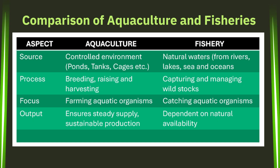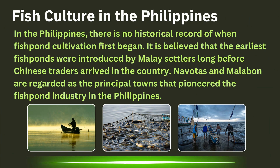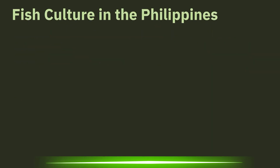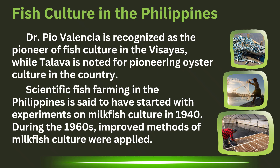The following is the comparison table of aquaculture and fisheries. Fish culture in the Philippines: there is no historical record of when fishpond cultivation first began. It is believed that the earliest fishponds were introduced by Malay settlers long before Chinese traders arrived in the country. Navotas and Malabon are regarded as the principal towns that pioneered the fishpond industry in the Philippines. Dr. Pio Valencia is recognized as the pioneer of fish culture in the Visayas, while Talaiva is noted for pioneering oyster culture in the country.